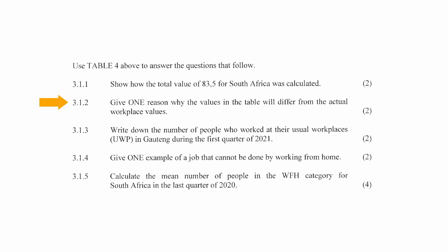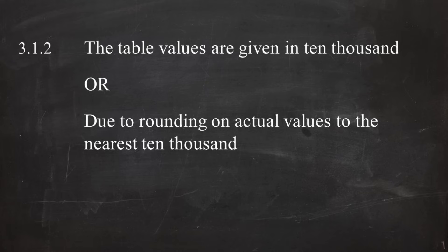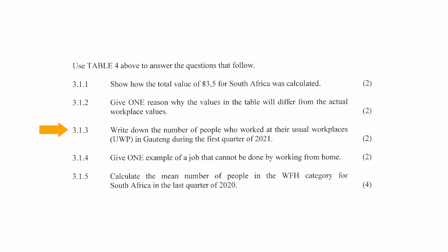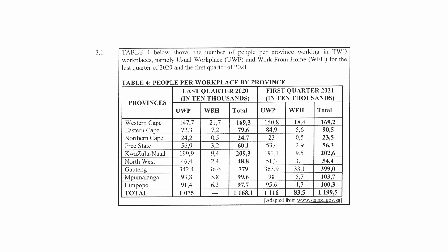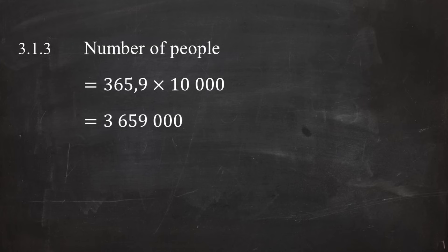In question 3.1.2, you have to give one reason why the values in the table will differ from actual workplace values. From the table, we see the values are given in tens of thousands, meaning they are rounded to the nearest ten thousand. So the reason is that the values in the table are given in tens of thousands, due to the rounding of actual values to the nearest ten thousand. In question 3.1.3, you have to write down the number of people who worked at the usual workplace in Gauteng during the first quarter of 2021. From the table, the value is given as 365.9, which multiplied by ten thousand gives a total of 3,659,000.